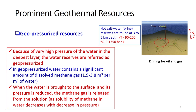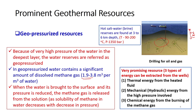Geopressurized water contains a significant amount of dissolved methane gas — about 1.9 to 3.8 cubic meters per cubic meter of water, a very high concentration. When the water is brought to the surface and pressure is reduced, methane is released from the solution, as the solubility of methane in water decreases with decreasing pressure. This resource provides three forms of energy: thermal energy from the heated fluid, mechanical energy from the high pressure, and chemical energy from burning the methane gas.